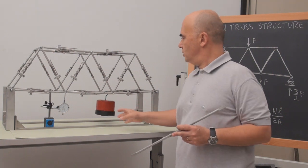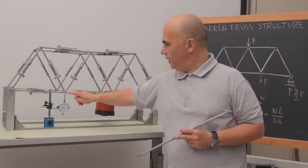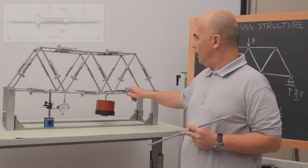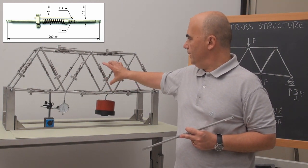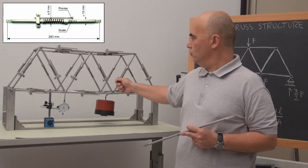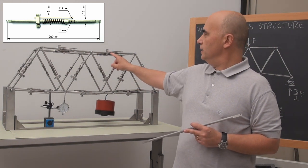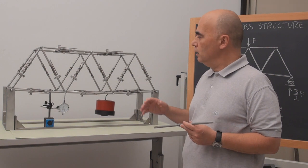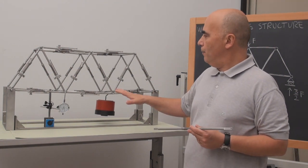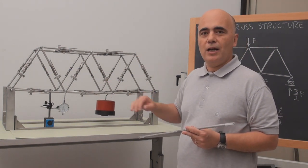We can watch the displacement of the nodes and we can also measure the elongation of the cords subject to tensile load and the shortening of the cords subject to compression load. In the following we will show a couple of tests on this structure.